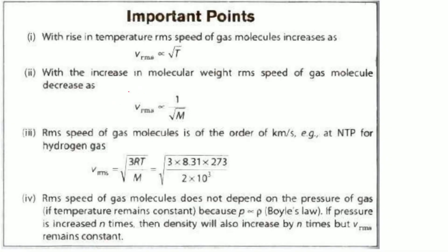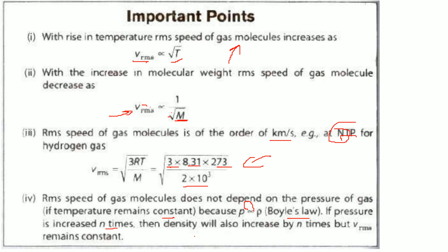Some important points: with the rise in temperature, the RMS speed of a gas molecule increases. With an increase in molecular weight, the RMS speed decreases because they are inversely proportional. The RMS speed of a gas molecule is of the order of km/s — for hydrogen gas at normal temperature and pressure, V_rms = √(3RT/M) = √(3 × 8.31 × 273 / (2 × 10⁻³)). The RMS speed does not depend on the pressure of the gas if the temperature remains constant, because speed is directly proportional to density by Boyle's law. If pressure is increased n times, density also increases by n times.